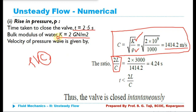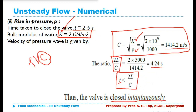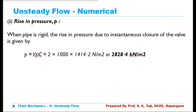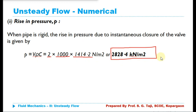In this case, the strain energy is stored in the water, so we consider bulk modulus for instantaneous closure. Now calculate 2L/C, which comes out as 4.24 seconds. Since T = 2.5 seconds is less than 4.24, the valve has been closed instantaneously. For instantaneous closure, pressure intensity P = ρVC. Putting in the values — velocity 2 m/s, density 1000 kg/m³, and C = 1414.2 m/s — the pressure rise is 2828.4 kilonewton per meter square.